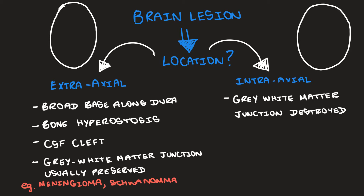In contrast, with an intra-axial lesion, the grey-white matter junction is usually destroyed. For instance, if we draw a brain here, usually you can see the grey matter peripherally and the white matter centrally, and you can see a distinction between the two. However, in an intra-axial lesion, this junction is usually destroyed.